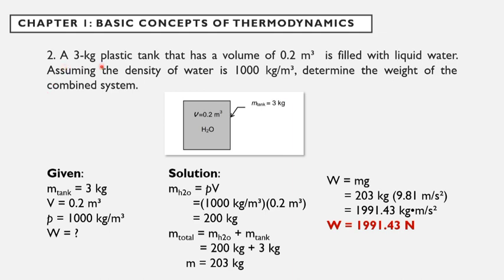A 3 kg plastic tank that has a volume of 0.2 m³ is filled with liquid water. Assuming the density of water is 1,000 kg per m³, determine the weight of the combined system.